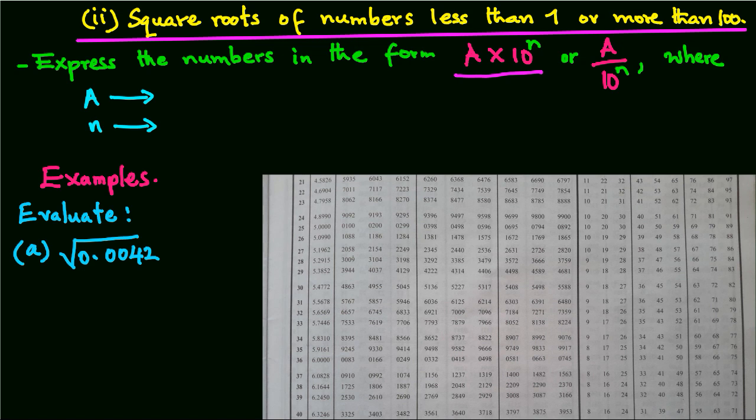or A over 10 power n, where A is a number between 1 and 100, and n is an even number. There is a reason why n must be even, and we are going to see that from our examples.